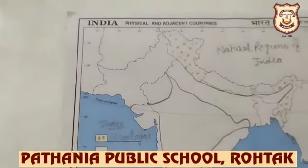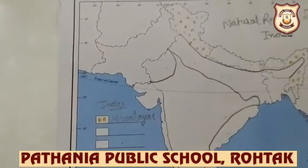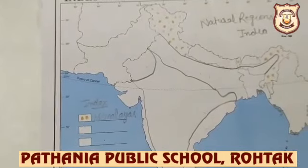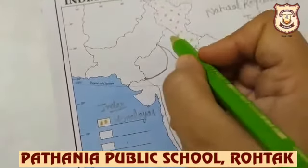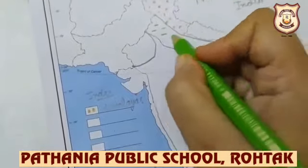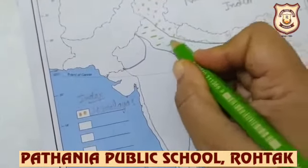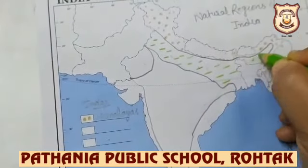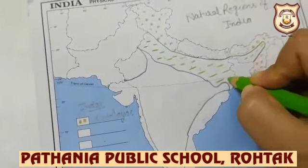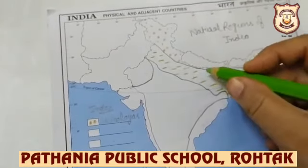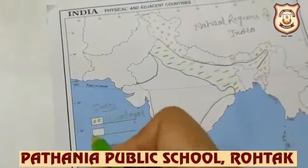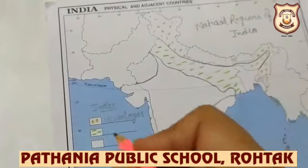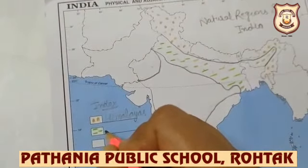Next is the northern plains. Northern plains are very fertile. We will show this by using green color dashes. You will show the northern plains area with green dashes and write 'Northern Plains' on the map.